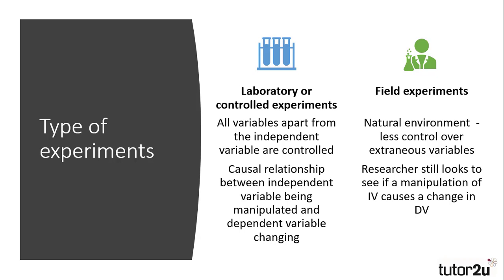There are two main types of experiments in sociological research: lab experiments or controlled experiments, and field experiments. Lab experiments take place in a controlled environment, not necessarily a laboratory. The rationale is that researchers are able to control all other variables — extraneous variables — to demonstrate that any change in the dependent variable has been caused by manipulating the independent variable. This can establish a cause-and-effect, or causal, relationship between the two variables, which is an important feature of scientific research.